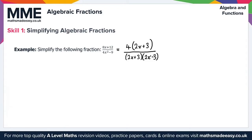Now that we've factorized the numerator and denominator separately, we can clearly identify what's common to both: the factor (2x plus 3) appears in both the numerator and denominator. So we simply cancel those common terms, which leaves us with 4 over (2x minus 3). That's the solution to this example.